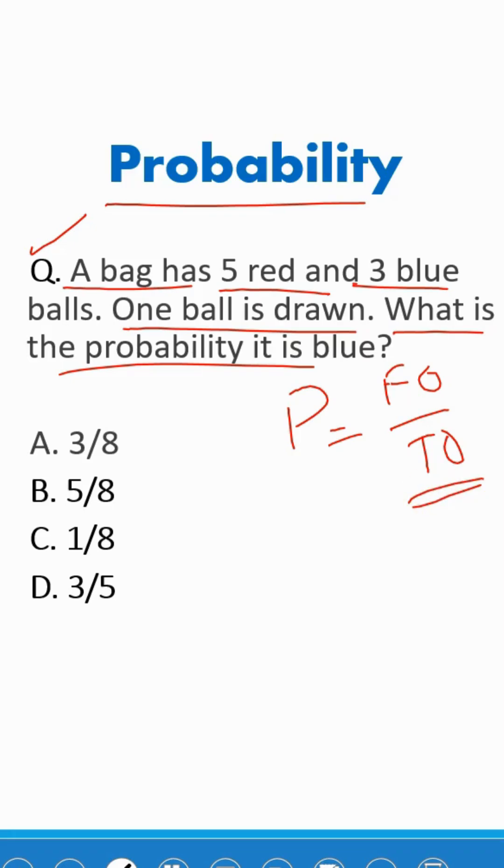First check what is the total outcome. Total outcome is five plus three, so total outcome is eight. We are only interested in blue balls, so how many blue balls? Three. So the probability is three by eight. Option A is the right answer.